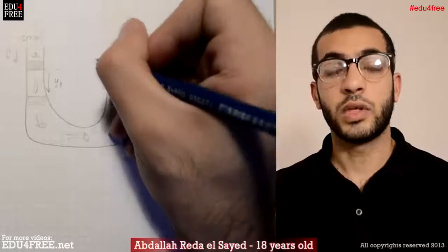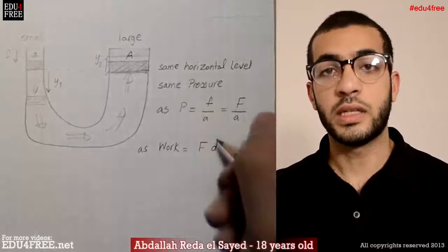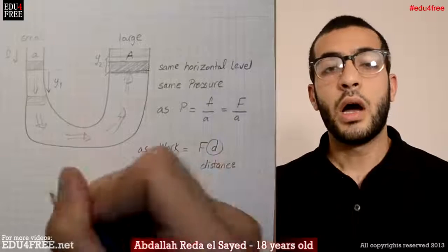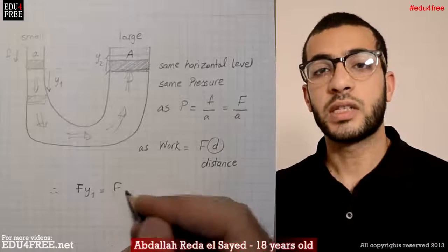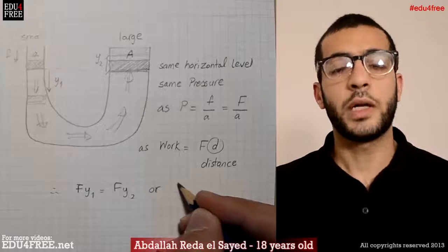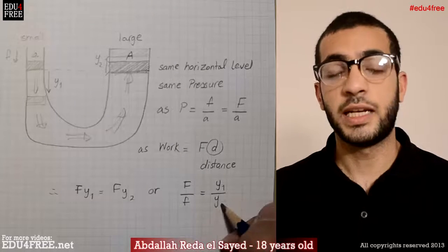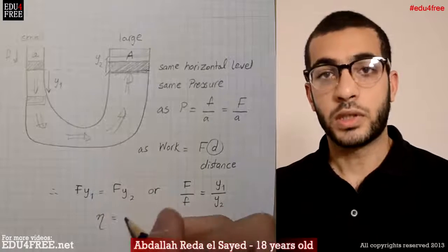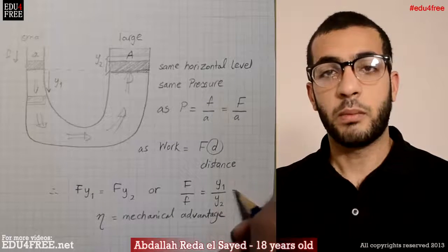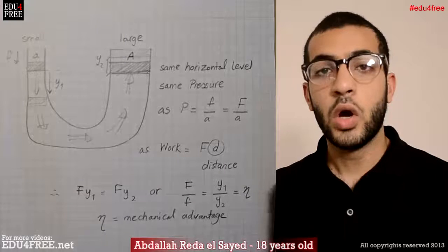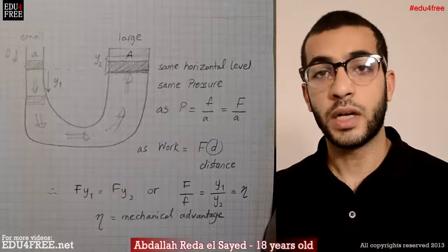We can obtain another equation by saying that the work that the two pistons do is actually equal. Since work equals force multiplied by distance, we name the distance moved by the small piston y1 and that of the large piston y2. By knowing the distance moved by the small piston we can know how much the large piston moves upward. So f·y1 equals F·y2, or in other words F over f equals y1 over y2.